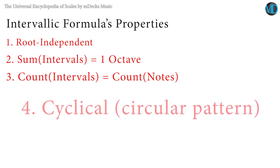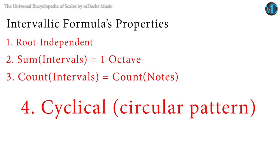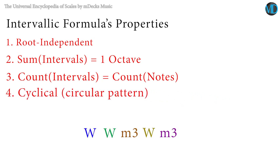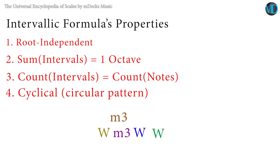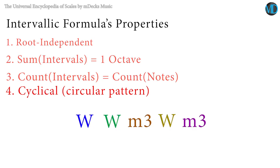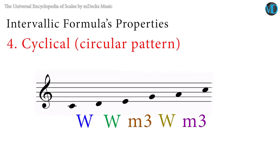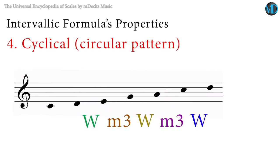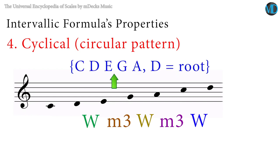The most important property is that the intervallic formula is cyclical over the octave, meaning that no matter how many times we cycle through the formula, we always get a well-formed scale with the same number of notes as the original. Take the major pentatonic formula: whole, whole, minor third, whole, minor third. The first and last notes are the same pitch class. Cycling the formula to the left is like taking the first whole step and putting it at the end: whole, minor third, whole, minor third, whole. But the notes are exactly the same as in the original scale: D, E, G, A, and C.